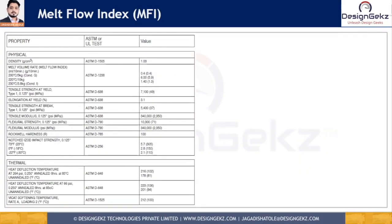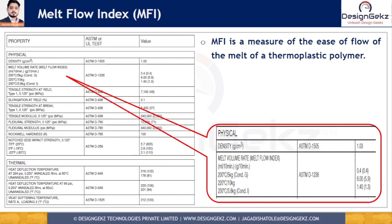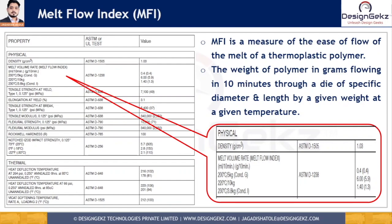On a polymer technical data sheet you might have seen melt volume rate or melt flow index MFI values mentioned with some temperature and weight values. The melt flow index is the measure of ease of flow of a melt of a thermoplastic polymer, defined as the weight of polymer in grams flowing in 10 minutes through a die of specified diameter and length by a given weight at a given temperature. It is also defined as the measurement of the rate of extrusion of a molten resin through a die of specified length and diameter under prescribed conditions of temperature and pressure in 10 minutes. The unit of MFI is grams per 10 minutes.